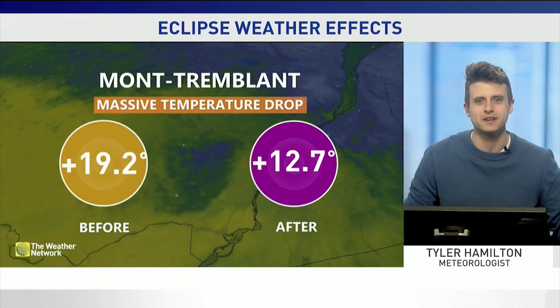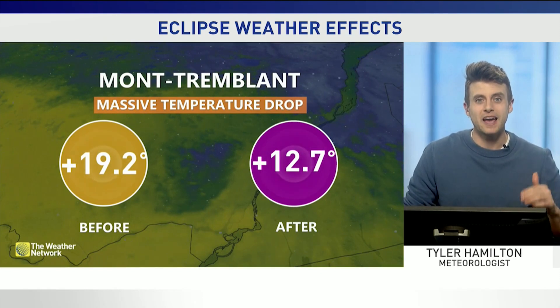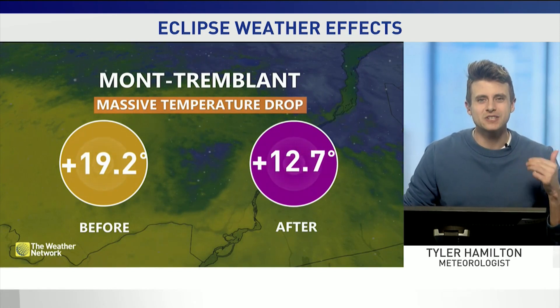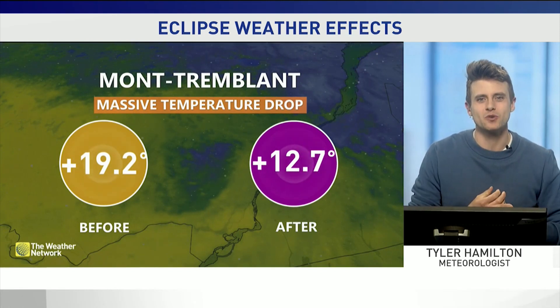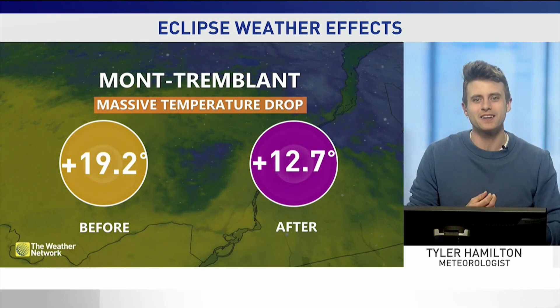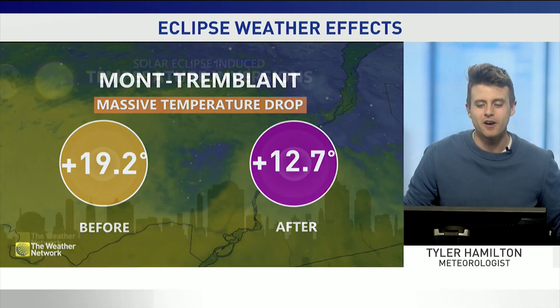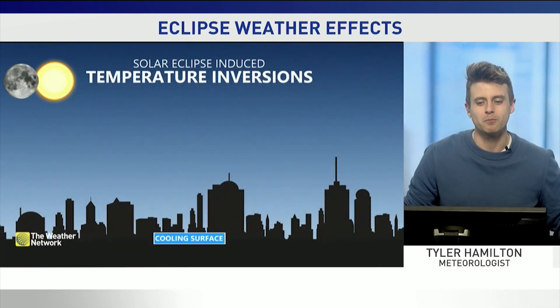That's over a three degrees Celsius drop, but portions of southern Quebec had over a six degree temperature drop, falling outside the path of totality just north of Mont Tremblant.